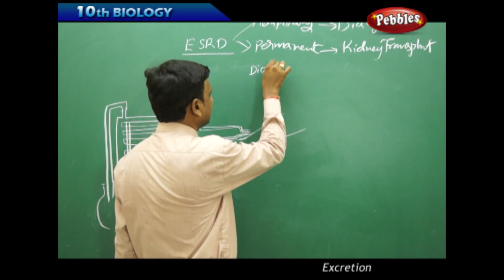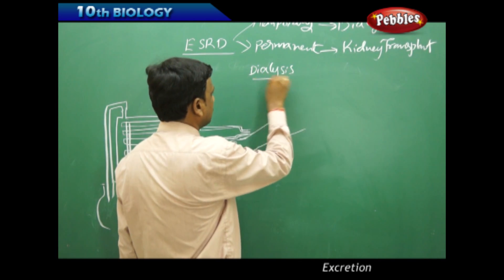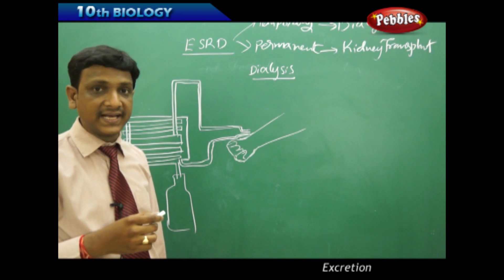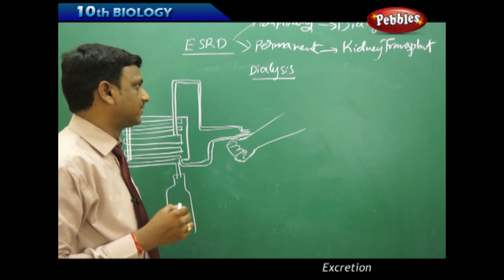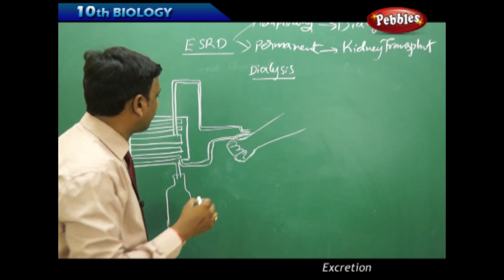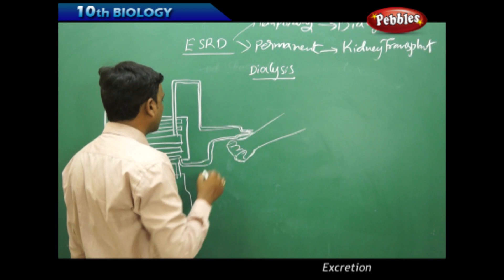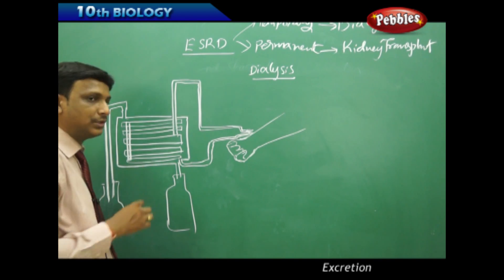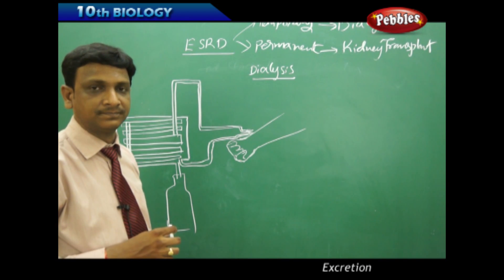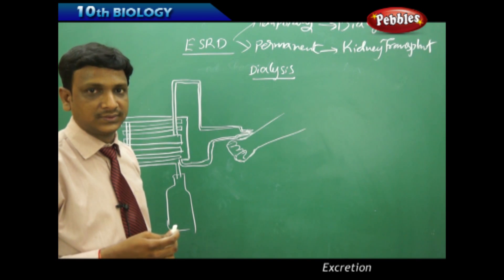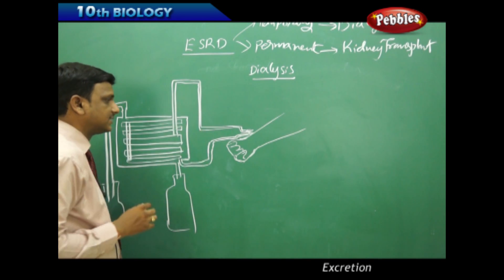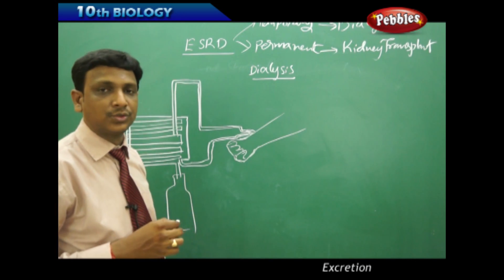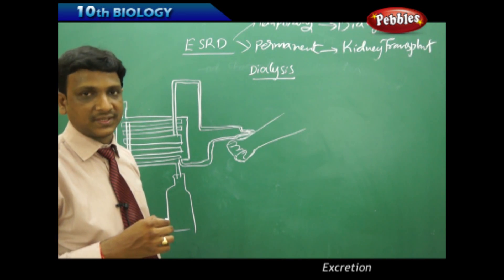Dialysis is carried out with the help of a dialyzer — the equipment or machinery which helps in the process of dialysis. The dialyzer has a chamber containing a solution which is almost equivalent to blood. This dialyzing solution is present in the dialyzing chamber, and the dialyzer is connected to the person through the artery and vein.